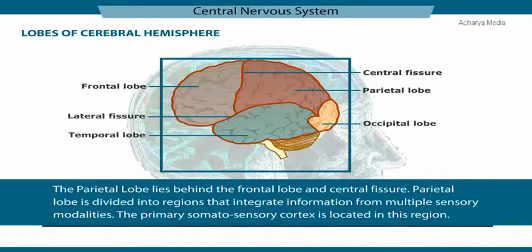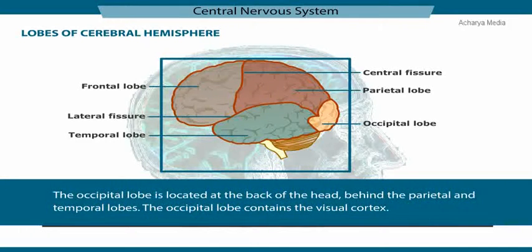The parietal lobe lies behind the frontal lobe and central fissure. It is divided into regions that integrate information from multiple sensory modalities, and the primary somatosensory cortex is located in this region. The occipital lobe is located at the back of the head behind the parietal and temporal lobes, and it contains the visual cortex.